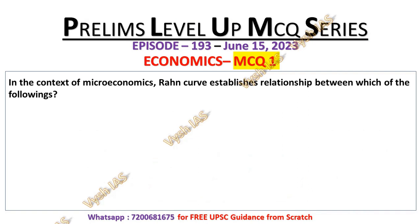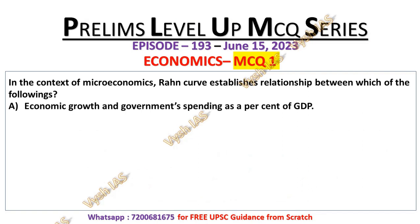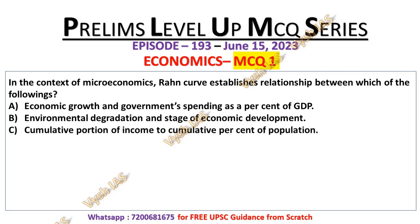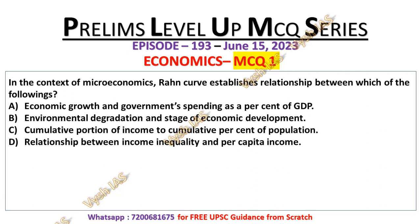Today's MCQ number 1. In the context of microeconomics, Rahn Curve establishes a relation between which of the following? Statement A: Economic growth and government spending as a percentage of GDP. B: Environmental degradation and stage of economic development. C: Cumulative portion of income to cumulative percent of population. And D: The relationship between income inequality and per capita income. I will give you 10 seconds to try to answer this question.